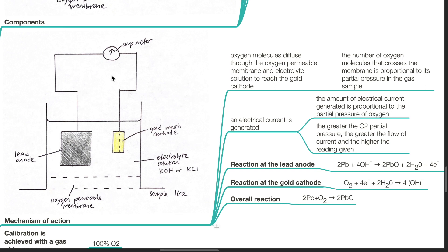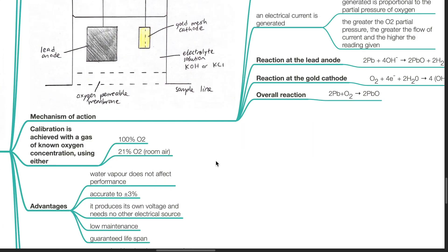Reaction at the lead anode: 2Pb + 4OH⁻ → 2PbO + 2H₂O + 4e⁻. Reaction at the gold cathode: O₂ + 4e⁻ + 2H₂O → 4OH⁻. And the overall reaction produces 2PbO. Calibration is achieved with a gas of known oxygen concentration, using either 100% oxygen or 21% oxygen.